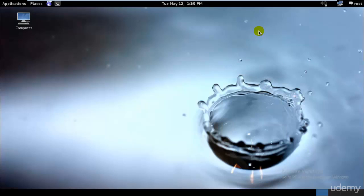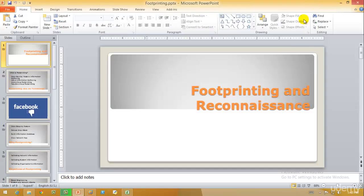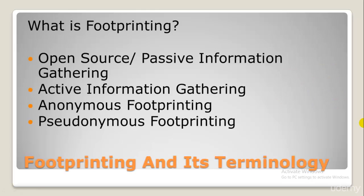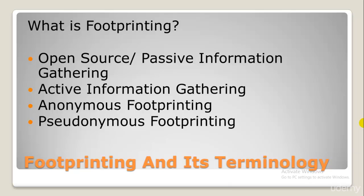Let's first understand what footprinting terminology is and what's included. Footprinting is about gathering information about specific targets. So, footprinting and reconnaissance — before going deep into this concept, it's important to know the basic terminology. The first is open source or passive information gathering, which I call PIG. It is the easiest way to collect information about a target organization, referring to gathering from open or publicly available sources such as newspapers, television, social networking sites like Facebook and Twitter, or blogs.